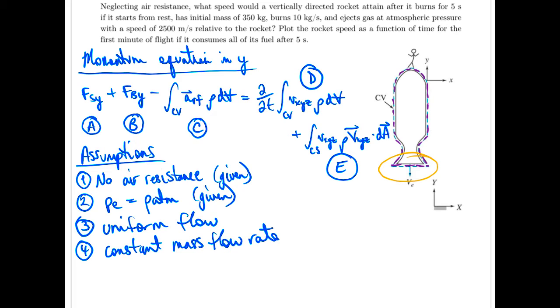Okay, so pretty much everything there is given. Number one and two are very explicitly given. Number three, it tells us the gas is ejected at 2500 meters per second. So again, it doesn't specify any variation across the surface or with time.